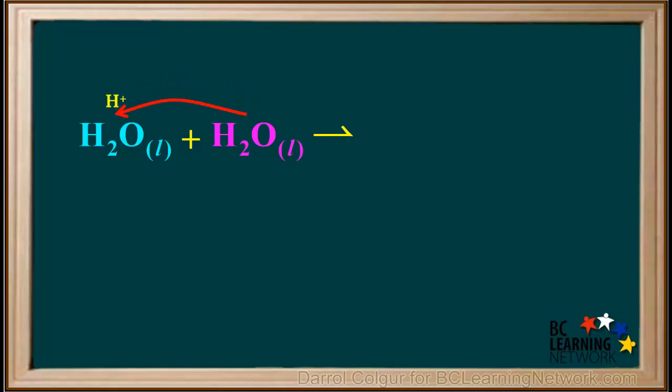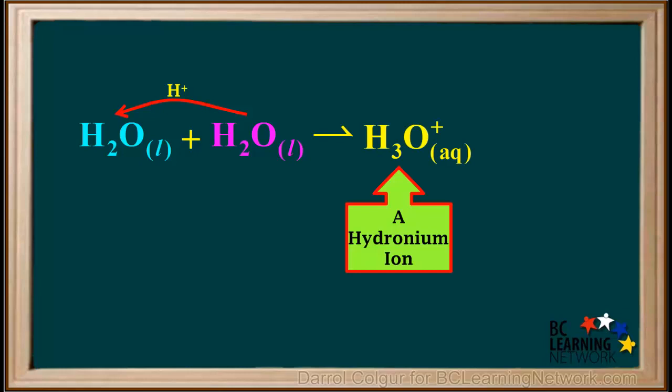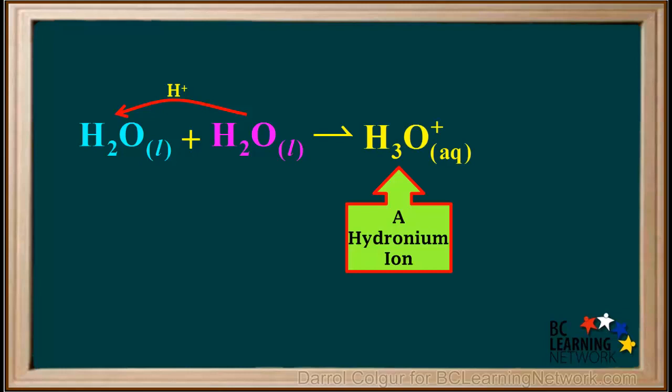The process can be summarized by an equation. When a proton is transferred from one water molecule to another, the water on the left gains a proton to become a hydronium ion, and the water on the right loses a proton to become a hydroxide ion.